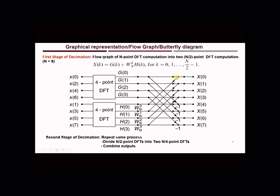In this computation, these cross markings indicate the flow of data from input towards output. For example, as you are computing capital X of 0, it is obtained by adding g of 0. The arrow points out the flow of the data. At these dots, the addition will take place between this g of 0 term and a product term which is h of 0 into w raised to 0 to the base n, where n here is 8. In this way, capital X of 1 is obtained as g1 plus h1 into w1.